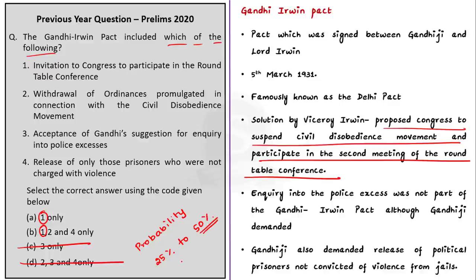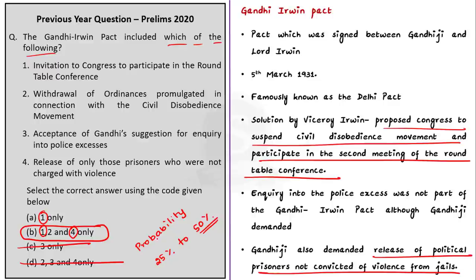Any aspirant who has studied about the Gandhi-Irwin Pact will know that Viceroy Irwin proposed Congress to suspend civil disobedience movement and participate in the second meeting of the round table conference. So statement 1 must be true. Only two options have statement 1 in their combinations: Option A and Option B. So the answer must be Option A or Option B. By just going through the first statement, we have eliminated Option C and Option D.